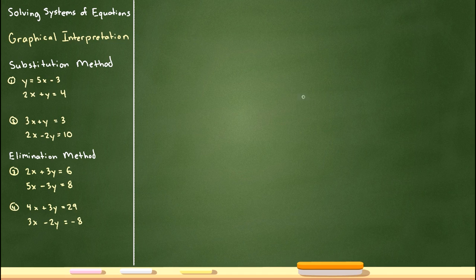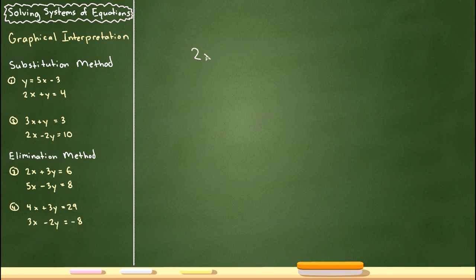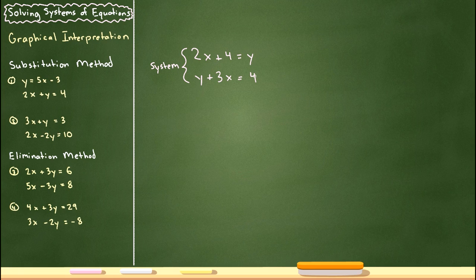First up, what is a system of equations? A system of equations is basically a list of equations. For example, if I write 2x plus 4 is equal to y, and I write y plus 3x is equal to 4, these two equations together are called a system. A system can consist of more than two equations — you could have an infinite number — but in algebra class you're mostly going to be working with two, maybe three.